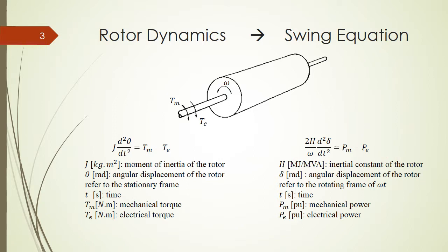We also express the same relations, but here we have H as the inertial constant of the rotor, which is megajoule over megaVA. This one expresses the relation between the kinetic energy of the machine or the rotor in comparison with the base power of the system. The P_m and P_e is the power that applies to the rotor, which is also in per unit. Delta here is the angular displacement of the rotor, but this time it refers to the rotating frame of omega times t. T here is also time. So we call this the swing equation, and this swing equation will be used to analyze the behavior of the rotor of the electric machine.